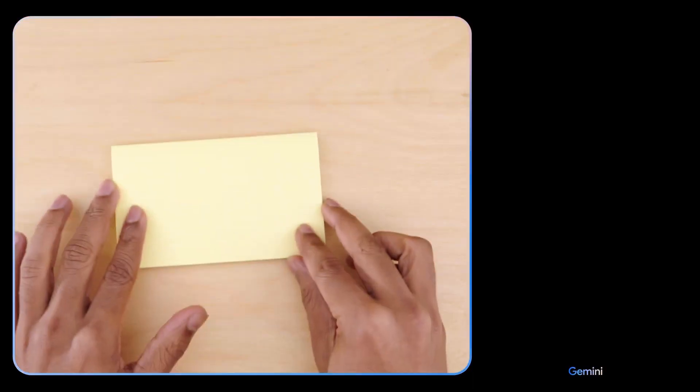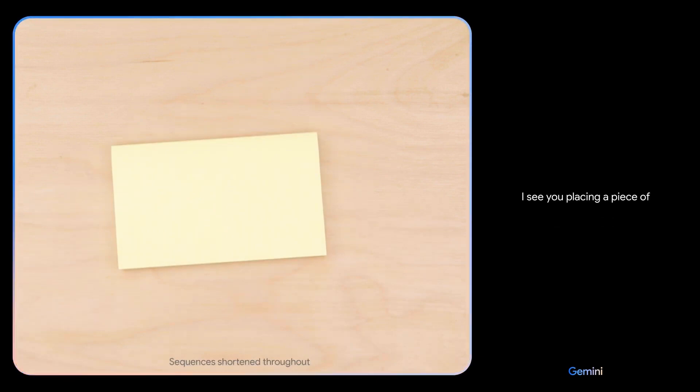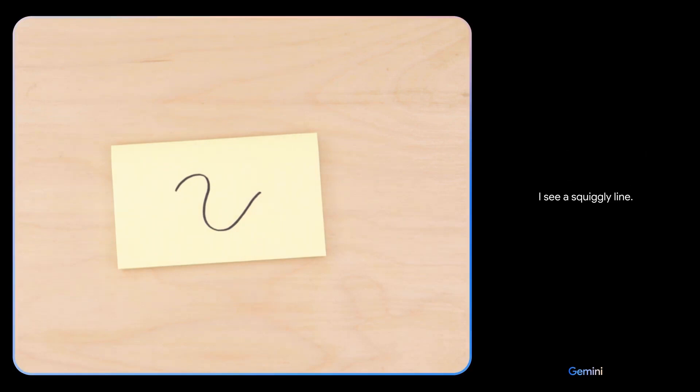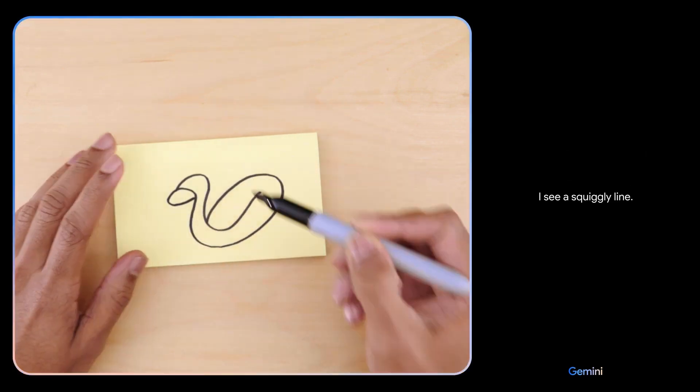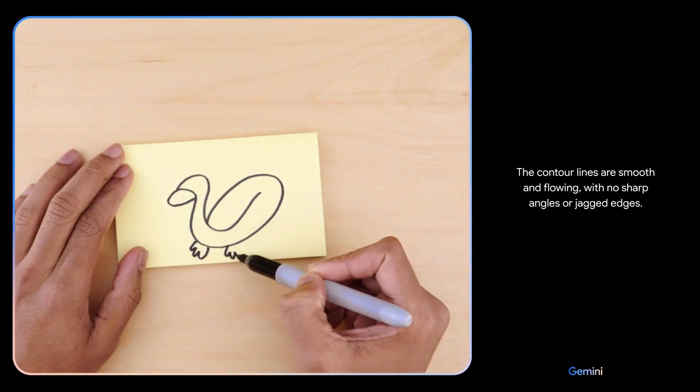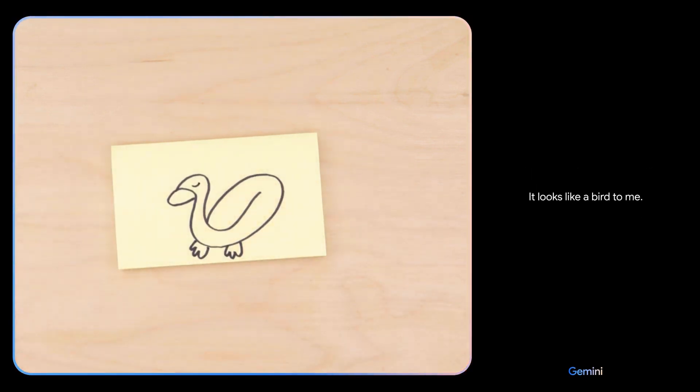Google also put up this really cool video on YouTube, so check this out. Alright, testing Gemini. Here we go. Tell me what you see. I see you placing a piece of paper on the table. I see a squiggly line. What about now? The contour lines are smooth and flowing with no sharp angles or jagged edges. It looks like a bird to me.